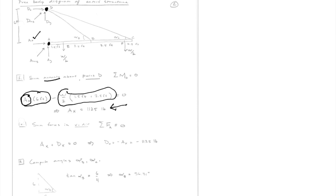Now we use another statics equation — summing forces in the X direction. We just have AX and DX, both acting in the same direction, which means DX has to be the negative of AX, which is minus 1,125 pounds. To proceed, we need to figure out the geometry by finding the angles alpha B and alpha C.